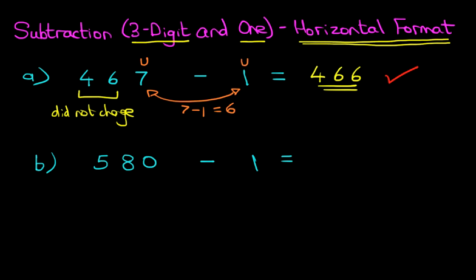Now the number we are subtracting is 1 and that's the units. Now let's have a look at 580. The units, well we've got 0 units. So we cannot do 0 minus 1. So what we're going to do is, we're going to look at the tens.